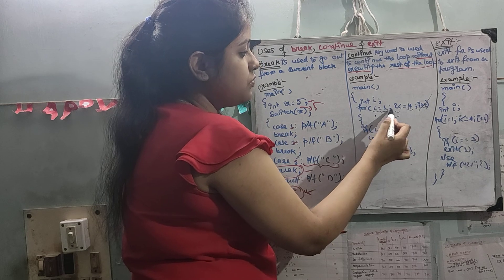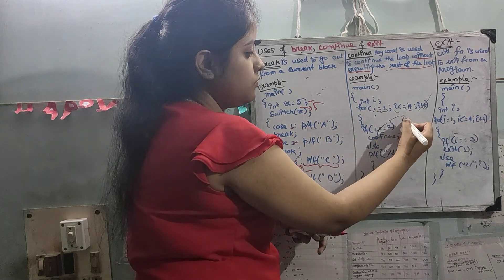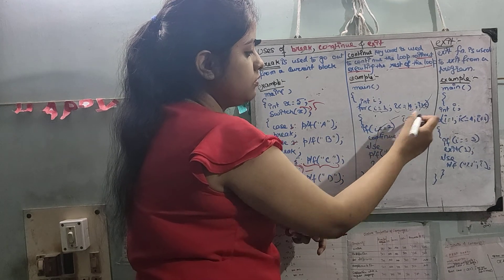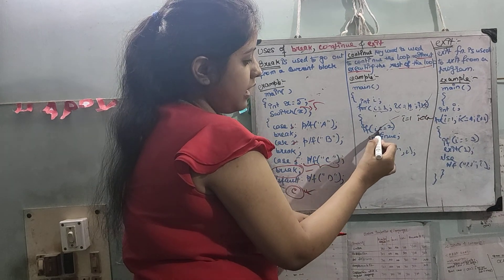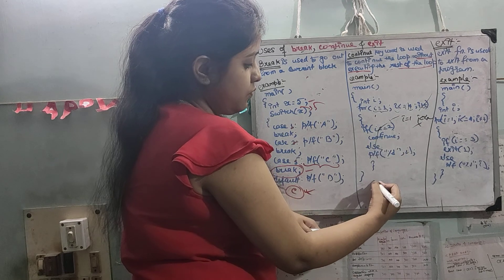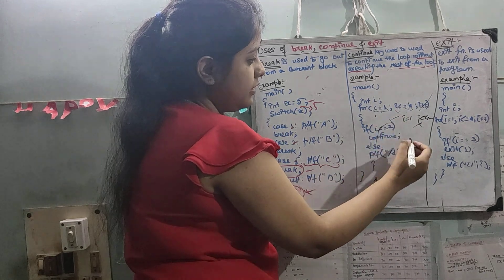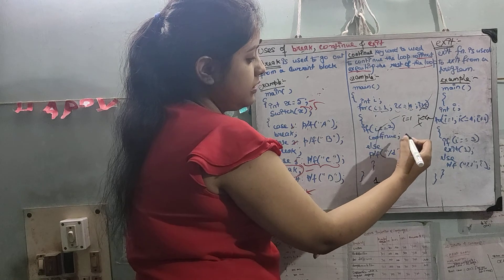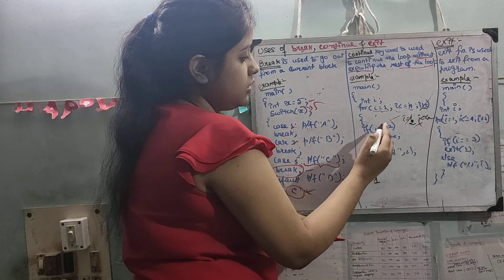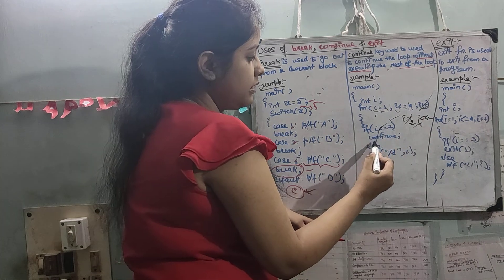i equals to 1, i less than equals to 4 — yes. Then if i equals to 2 — no. Then 1 is printed. Then i is incremented. i value becomes 2. So i equals to 2 — yes. So then continue.